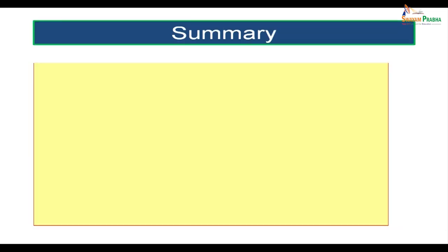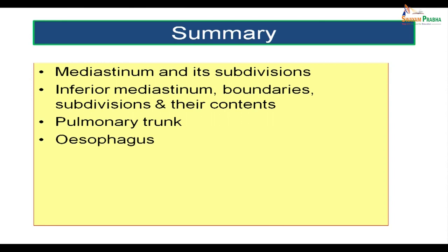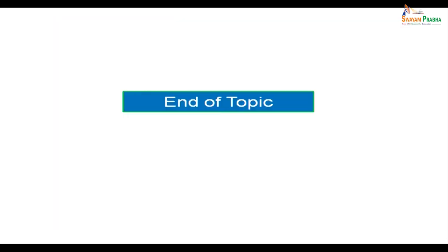To summarize this topic: we looked at the mediastinum and its subdivisions, the inferior mediastinum boundaries, subdivisions, and contents of each part. We discussed in detail the pulmonary trunk, the esophagus, the thoracic duct, the azygous venous system, and the thoracic sympathetic trunk.